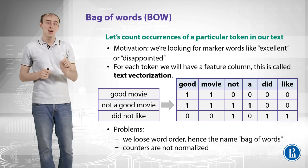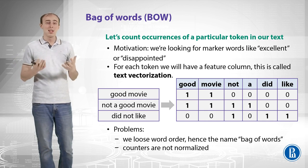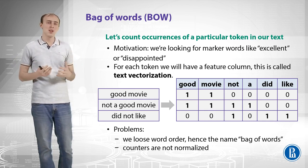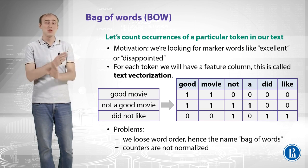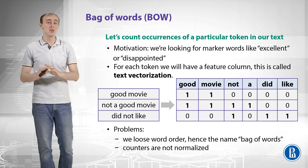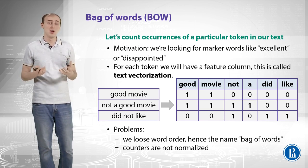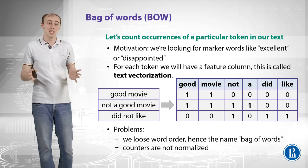Each dimension of that vector corresponds to a certain token in our database. You can see that it has some problems. The first one is that we lose word order, because we can actually shuffle our words and the representation on the right will stay the same. That's why it's called bag of words — because it's a bag, they're not ordered and can come up in any order.